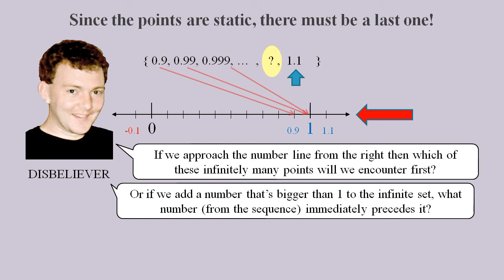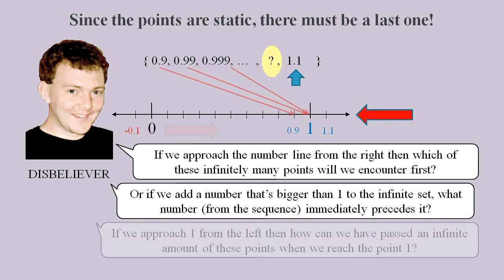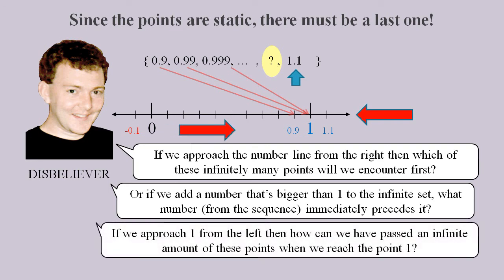We can't just avoid the issue by saying the least upper bound is 1, because 1 is not in the set. Or, if we approach 1 from the left, then how can we have passed an infinite amount of these points when we reach the point 1, and how can we not have passed a last point?